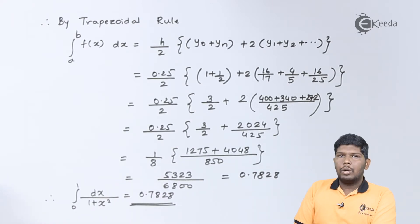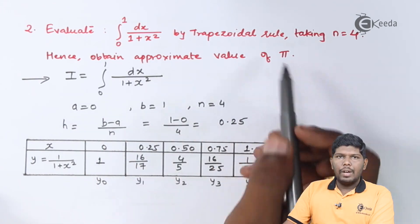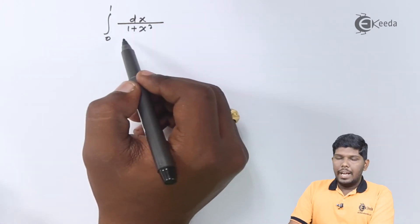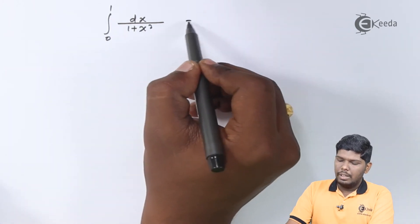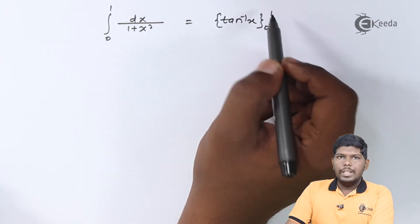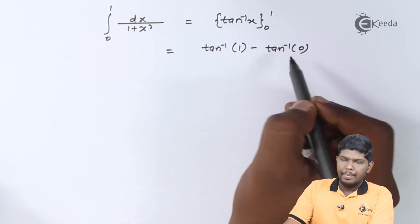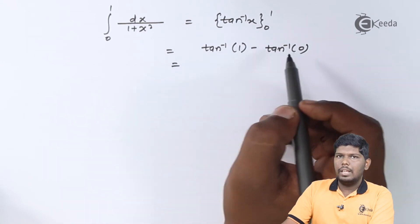Now, let us see the second part of the question. Also, they have asked you to find obtained approximate value of pi. If we directly evaluate the integral 0 to 1 from dx upon 1 plus x square, this will give you tan inverse of x within limit 0 to 1.